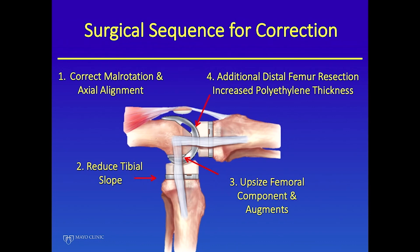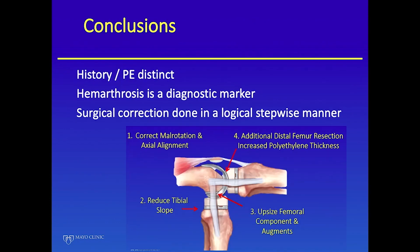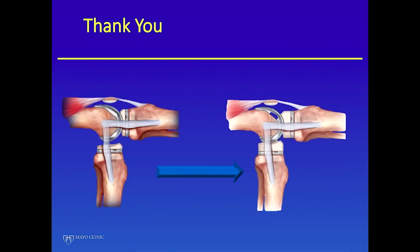The surgical sequence is: correct malrotational alignment, neutralize the slope, upsize the femur, and then address the joint line to equalize flexion-extension. It's pretty straightforward — most people just don't think about it in a logical, sequential way. In conclusion: use a distinct history and exam, remember that hemarthrosis can be diagnostic, and use a logical stepwise surgical plan.